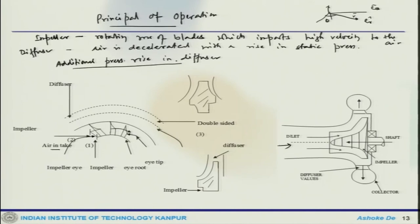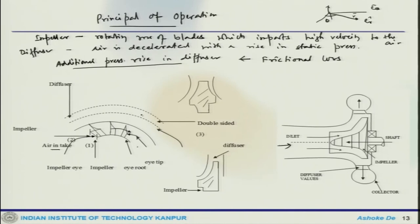One has to take into consideration frictional losses — there will be some loss in stagnation pressure due to friction. In typical design practice, half the pressure rise occurs in the impeller and the other half occurs in the diffuser. At the exit of the impeller, the blades are straight and oriented in the radial direction, which is why the flow predominantly remains radial.